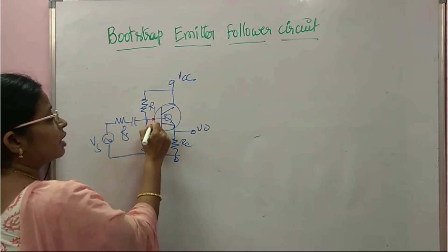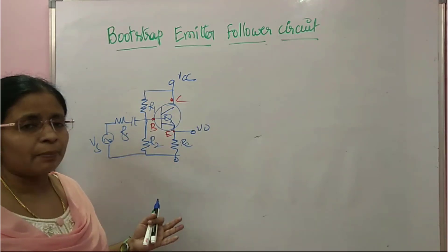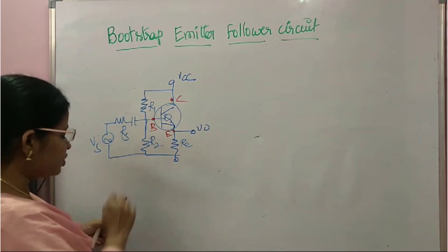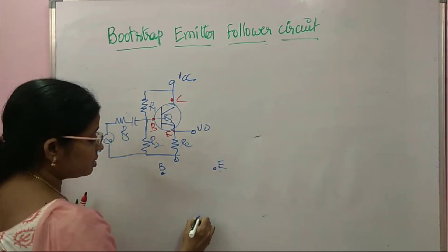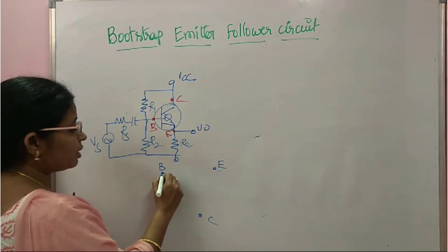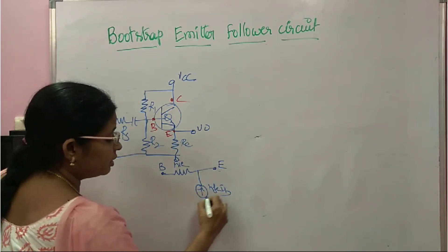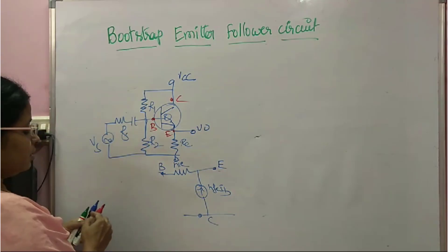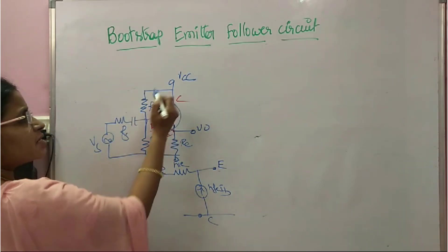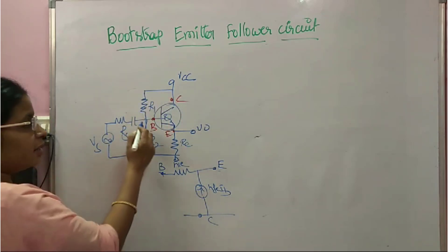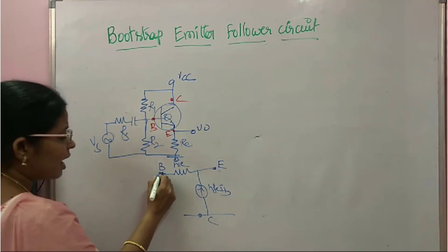First, let's look at the CC amplifier with base terminal, emitter terminal, and collector terminal. When analyzing this amplifier, I'll use the approximate h-parameter model. If you draw the approximate h-parameter model: the base is input, output is emitter, and this is the collector. Between base and emitter we have hie, and between collector and emitter we have hfe·Ib. For AC analysis, VCC must be zero, so when VCC is zero, R1's other end is grounded. R2 and R1 come in parallel.